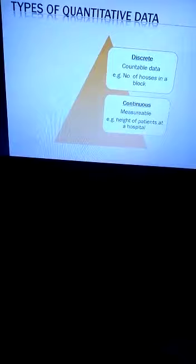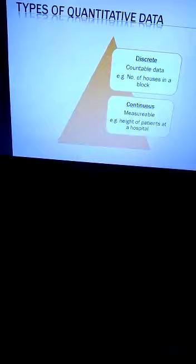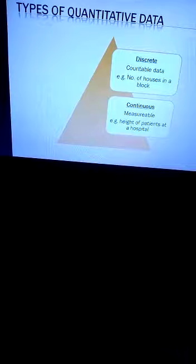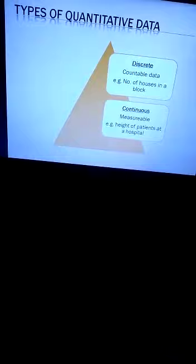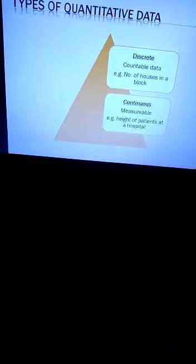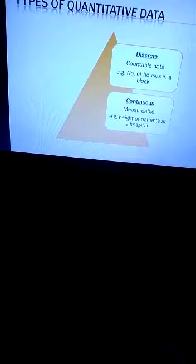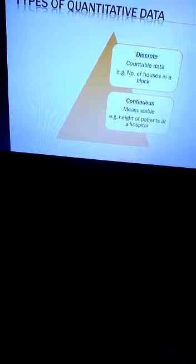There are further two types of quantitative data: discrete and continuous. Discrete data is that which is countable and can be expressed in whole numbers. For example, number of houses in a block, number of books in a library, number of beds in a hospital — anything that can be counted. Continuous data is that which is measurable. For example, height of patients at a hospital. Height can be in whole numbers, like 4 feet or 5 feet, but it can also be in decimal points, like 4.1 or 4.2.